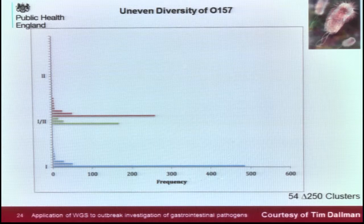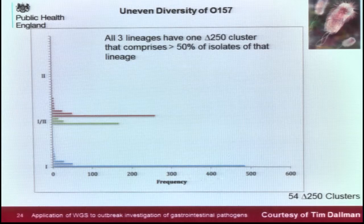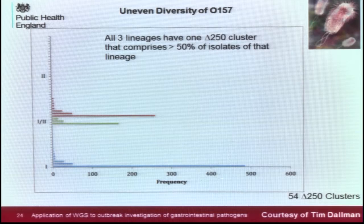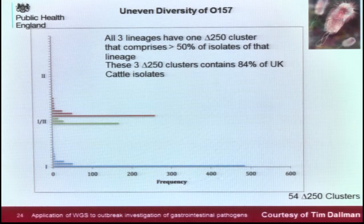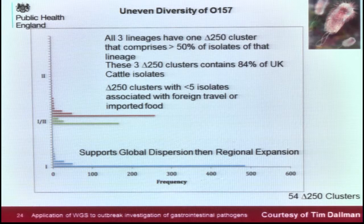You can also study the uneven diversity of O157 in the UK. All three lineages — one, two, and three — with SNP differences of more than 250 reduce to 54 different representative strains, and all three lineages comprise more than 50% of that lineage. These three clusters contain 84% of all cattle isolates in the UK. Those with fewer than five isolates are associated with foreign travel or imported food. This shows a global dispersion of O157 and a regional expansion in the cattle reservoir in the UK, similarly shown for the US, Australia, and Argentina.